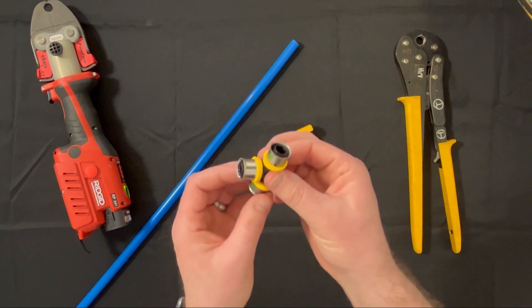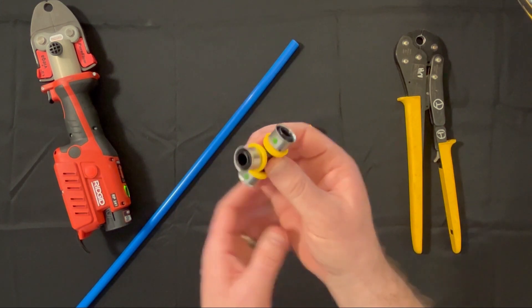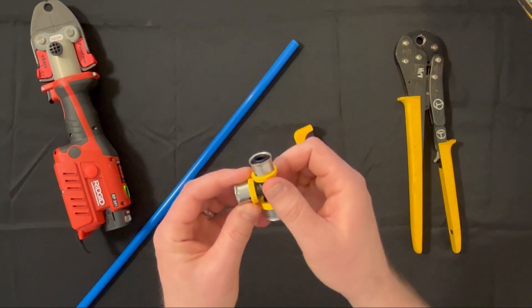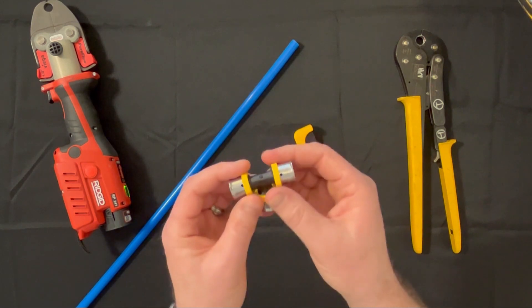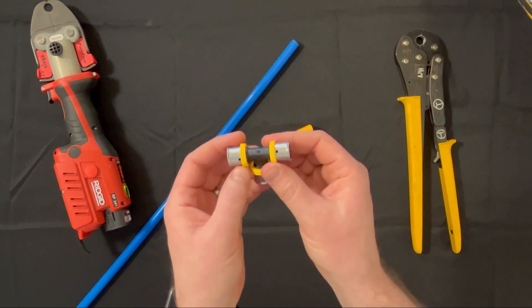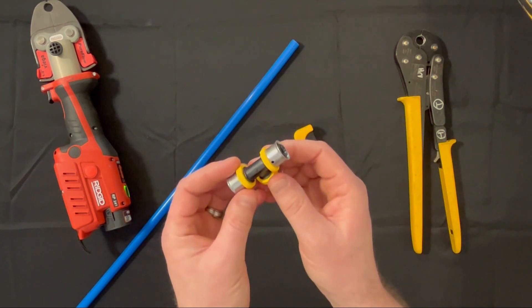The first step is to ensure that you have the appropriate fitting and all sleeves are intact and not damaged. On this fitting you will see colored rings help you identify the size you are working with.